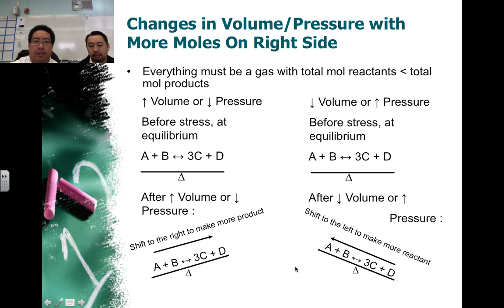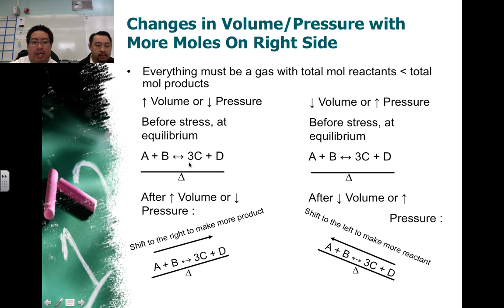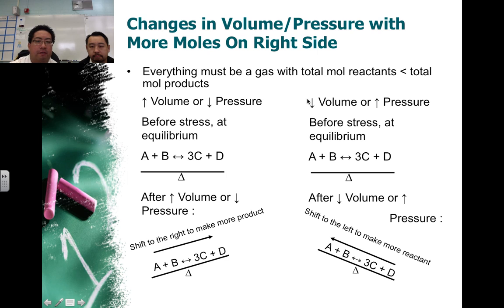A couple things to note: be mindful of what your reactants and products are, because if they're not gases, you're not going to count them towards the total mole values. Also, keep in mind that if the total moles are equal on both sides, then changing the volume or pressure will have no effect on the system at equilibrium.